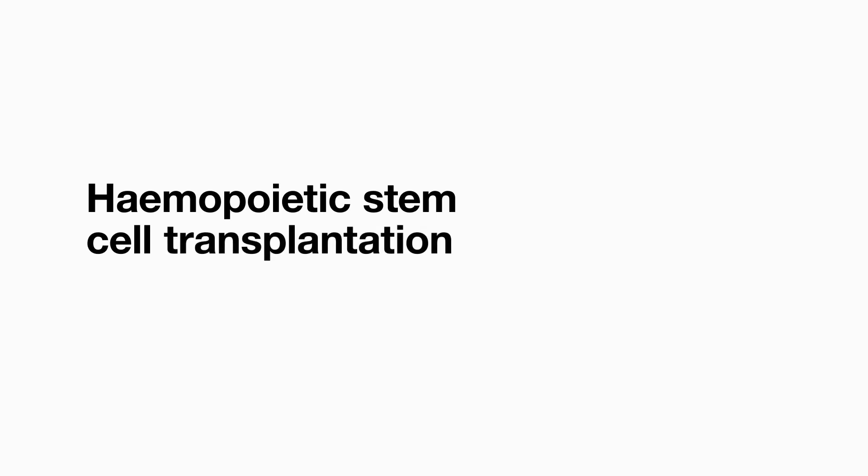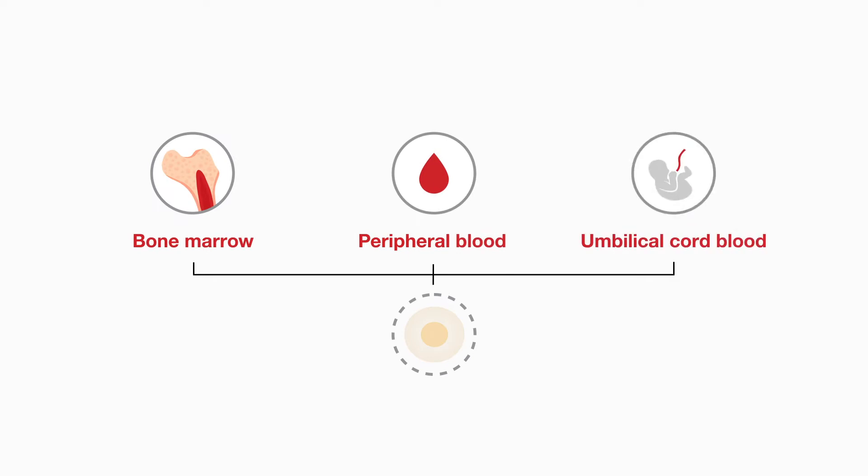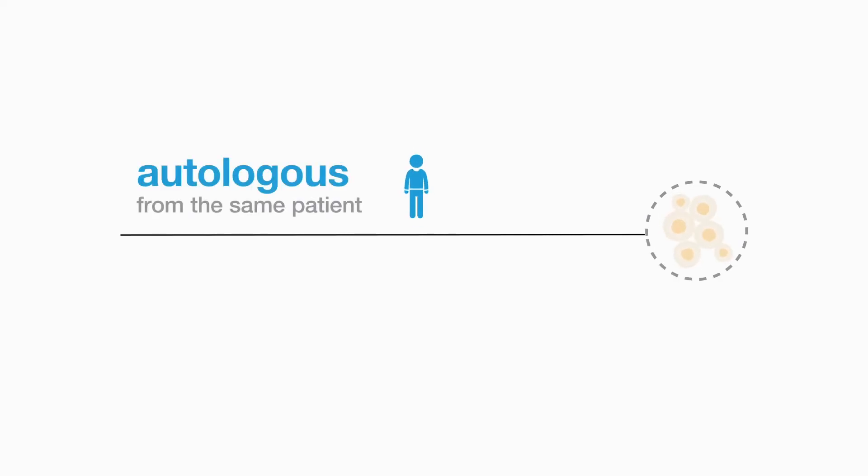Hemopoietic stem cell transplantation, known as HSCT, is the transplantation of multipotent hemopoietic stem cells derived from bone marrow, peripheral blood or blood from the umbilical cord and is used as a treatment option for a wide variety of malignant and non-malignant conditions. Depending on the type of stem cell donor, the transplant may be autologous when stem cells are collected from the patient or allogeneic when they are collected from another donor.